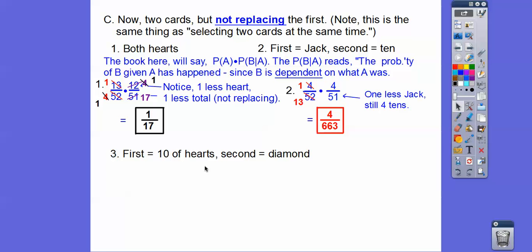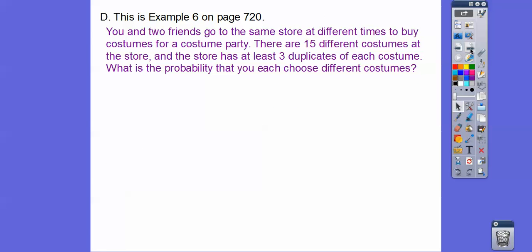This one says the first card is the 10 of hearts. There's only one 10 of hearts, so you leave it out. There are still 51 cards and still 13 diamonds in there. Go ahead and reduce — that's the probability for that dependent event. That's what dependent or conditional probability means.